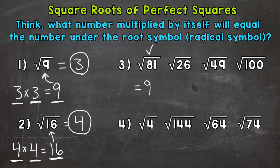Moving on to the square root of 26. We need to think: any number that multiplies by itself to equal 26? Well, 5 times 5 equals 25 — that's close but not quite. And 6 times 6 equals 36. So the square root of 26 is going to be somewhere between 5 and 6. It's not a perfect square and won't give us a whole number answer.